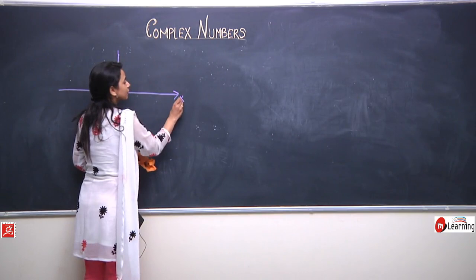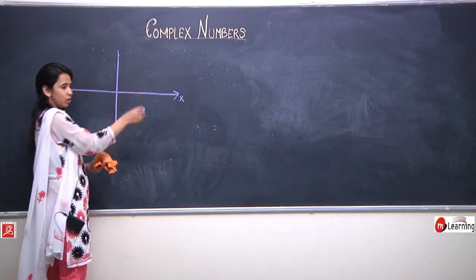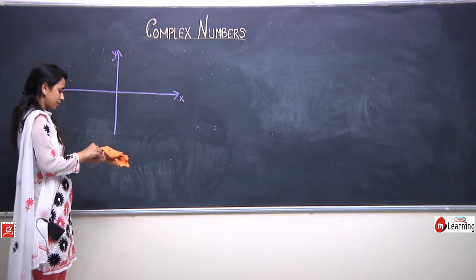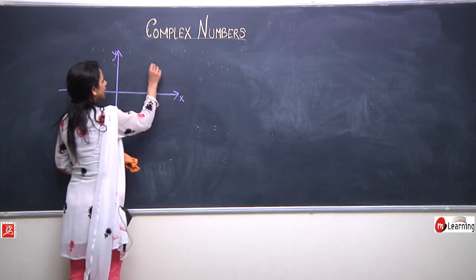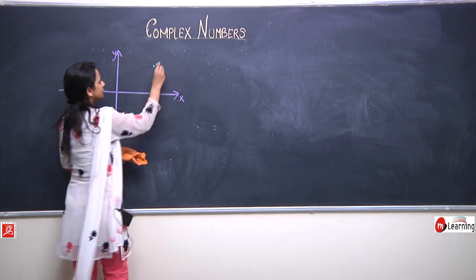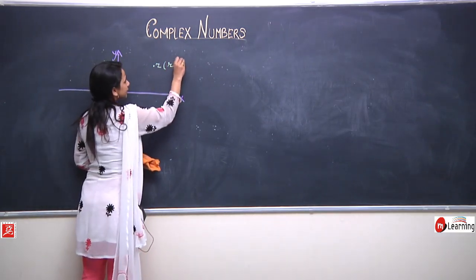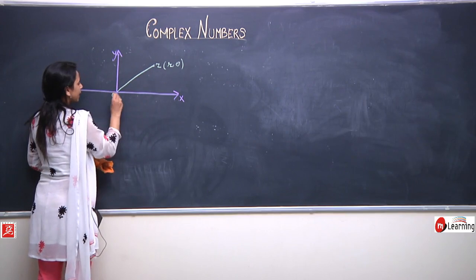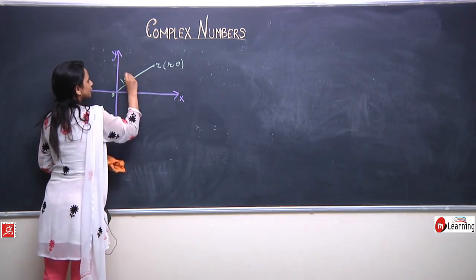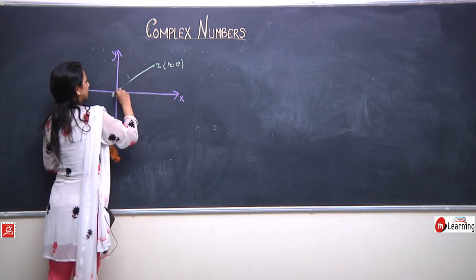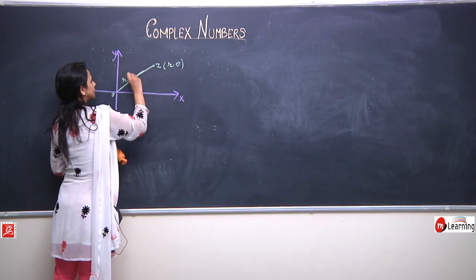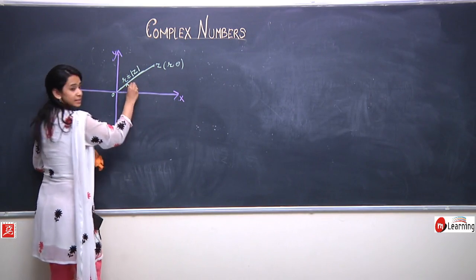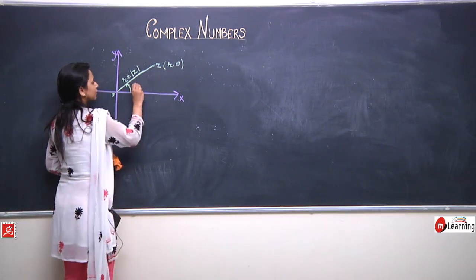Let us draw the Argand plane and represent the complex number. The x-axis is also called the real axis because it represents the real coefficient of z, and the imaginary axis represents the imaginary coefficient of z. Any complex number z of the form r comma theta can be represented here, where the vector OZ equals r, or mod z, is the displacement of the complex number from the origin, and theta is the argument of z, also written as arg(z).